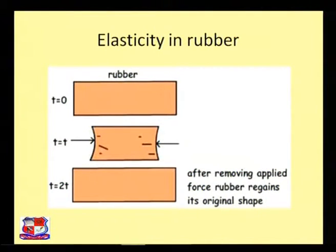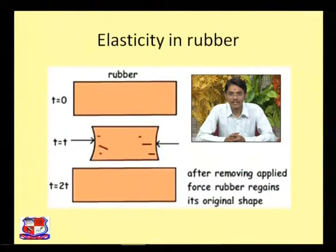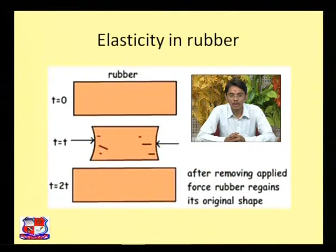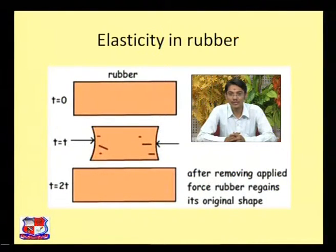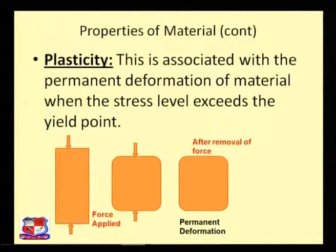A basic diagram is shown here. An object of rubber is shown — at t=0 seconds no load is applied. At t=t seconds, an external compressive force is applied, and the rubber object undergoes deformation — its total volume and size change. Since rubber is an elastic material, after the removal of the applied force, rubber regains its original shape. This demonstrates the elasticity that rubber possesses.